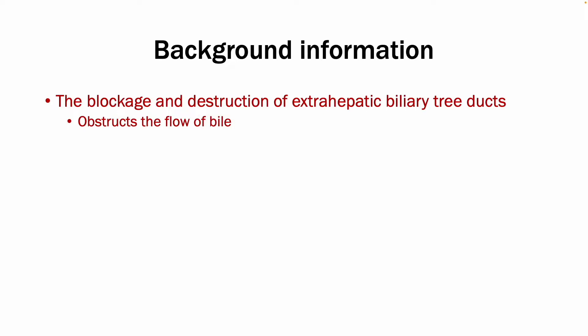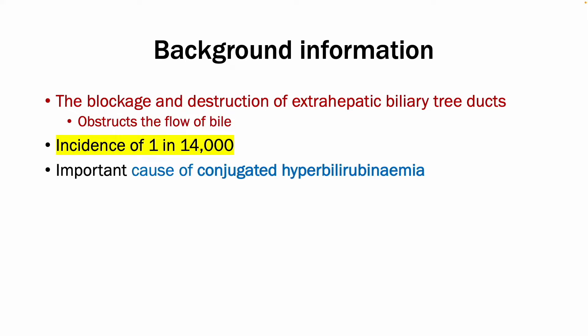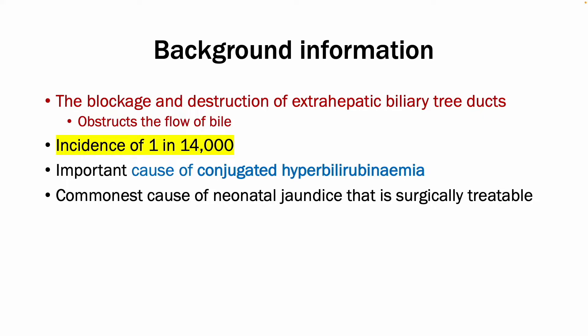It has an incidence of 1 in 14,000 and is a very important cause of conjugated hyperbilirubinemia in newborns that needs to be excluded in any jaundiced baby. It is the commonest cause of neonatal jaundice that is surgically treatable, and very importantly, it is fatal without surgery.